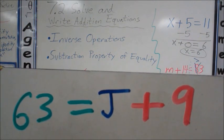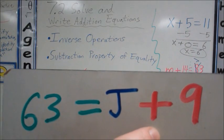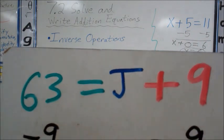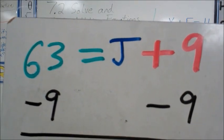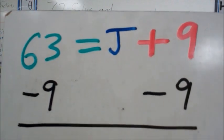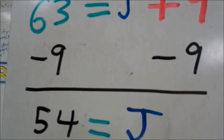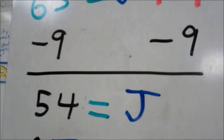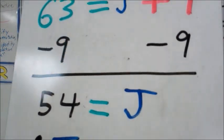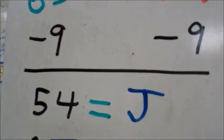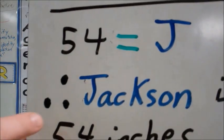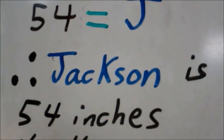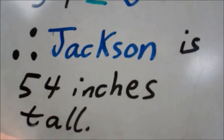When we solve this, we're looking at the right side of the equation, and we notice that we have a plus 9. The inverse of plus 9 is minus 9, so we're going to subtract 9 from both sides of the equation. When we get this, we have 54 equals J. But we're not quite done, because the problem said, what is Jackson's height? So since we have a word problem, let's go one step further. We can use these three little dots. These three little dots in math mean therefore. Therefore, Jackson is 54 inches tall.